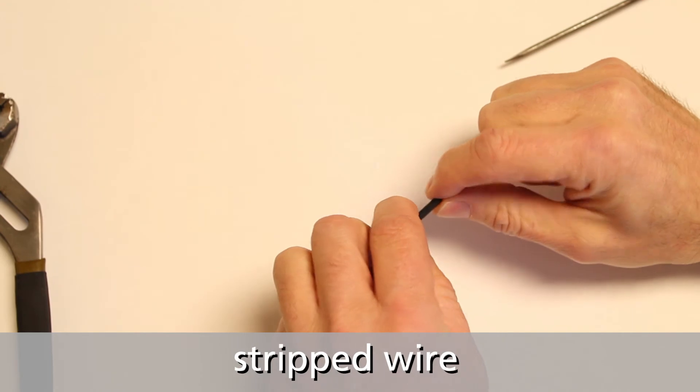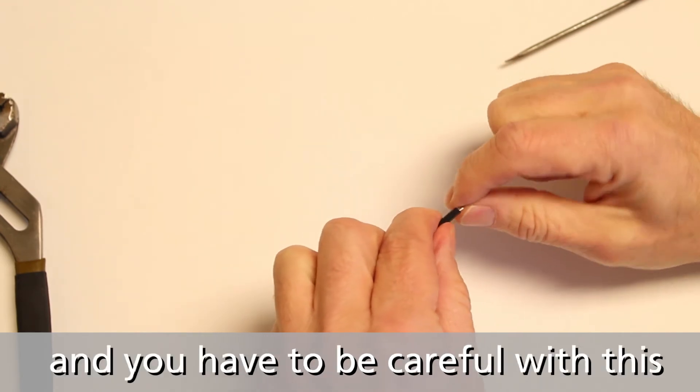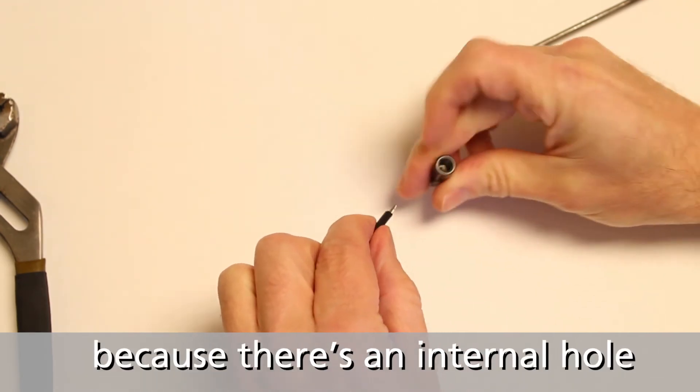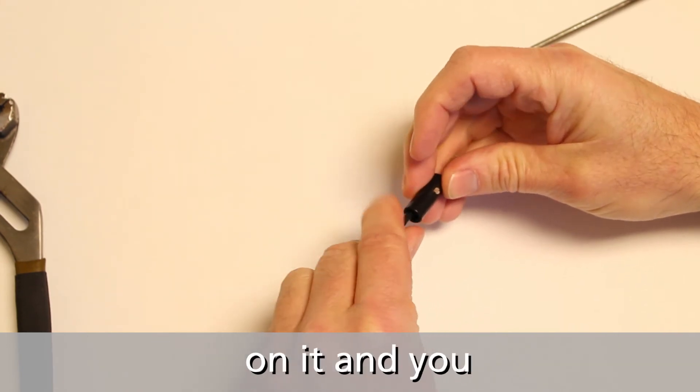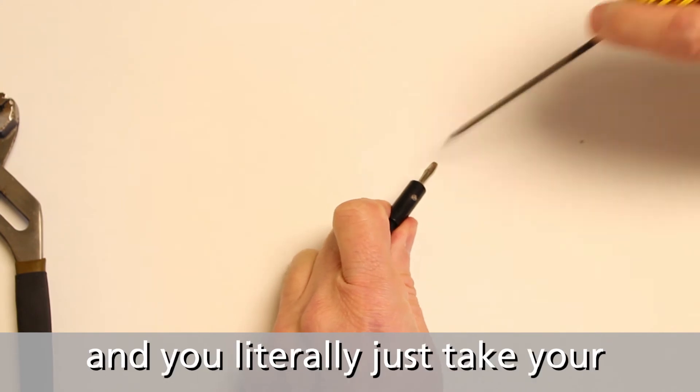Next, simply take your stripped wire. You have to be careful with this because there is an internal hole in there that you actually have to hit with it. Try to stay centered on it and you can almost feel it when you do it.